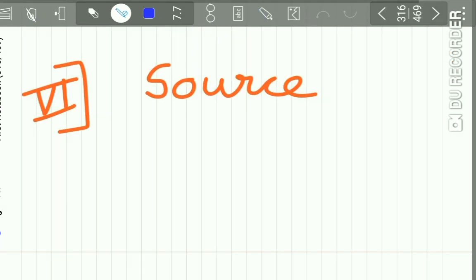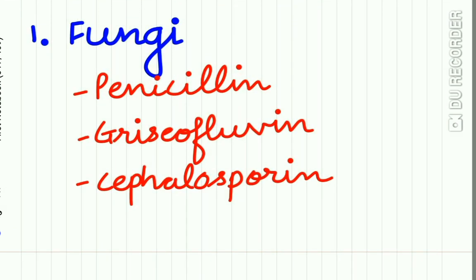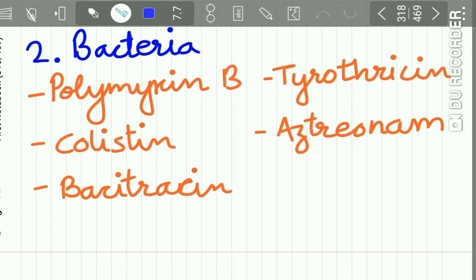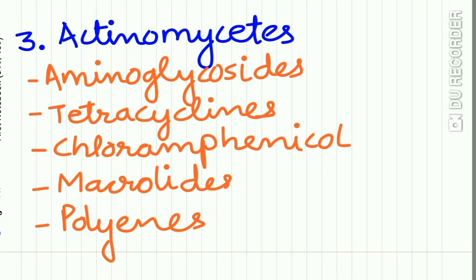The sixth and last system of classification depends upon the source from which the antimicrobial agent is derived. Drugs obtained from fungi include penicillin, griseofulvin, and cephalosporin. Drugs obtained from bacteria include polymyxin B, colistin, bacitracin, tyrocidine, and aztreonam. Drugs derived from actinomycetes include aminoglycosides, tetracycline, chloramphenicol, macrolides, and polyenes.